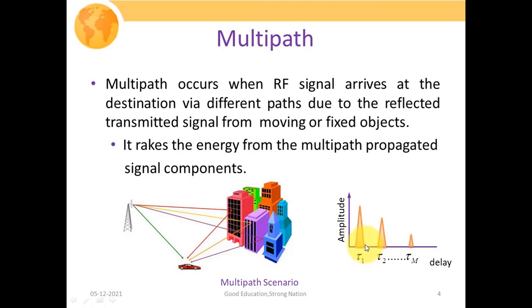At particular tau 1 we have a peak, and at tau 2 that peak is for the second multipath component. Similarly, up to tau M, if we consider M multipath components, each peak represents the maximum amount of signal received after that corresponding delay.